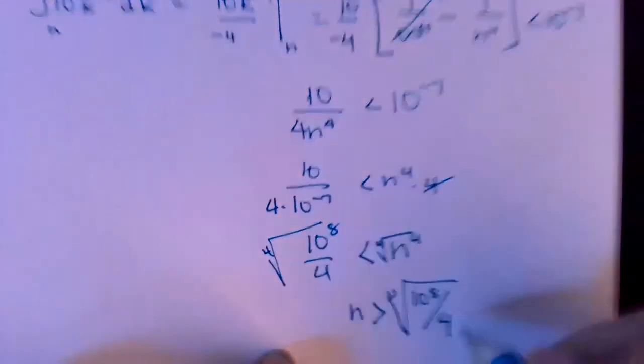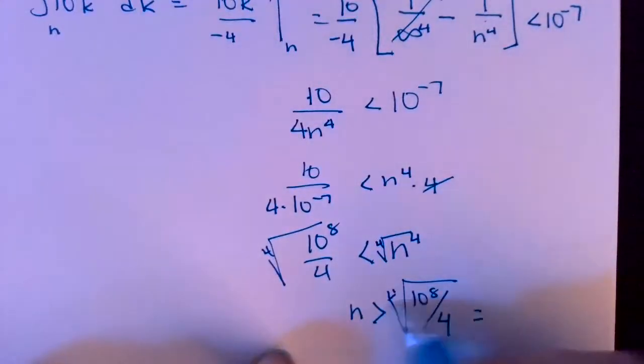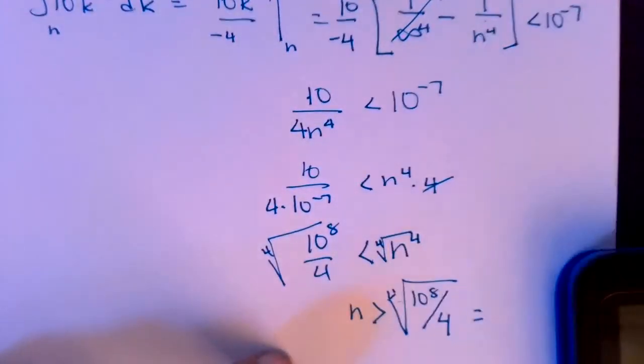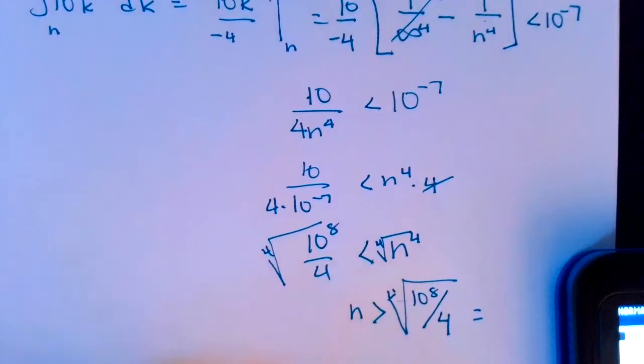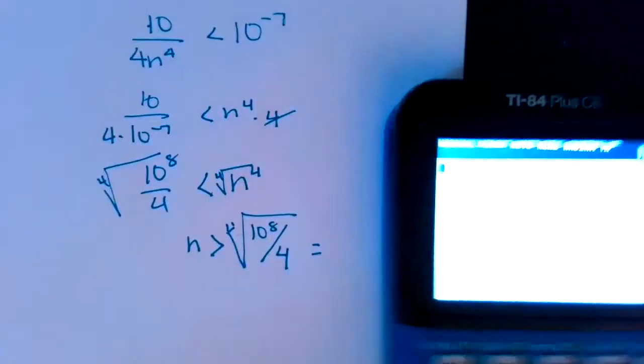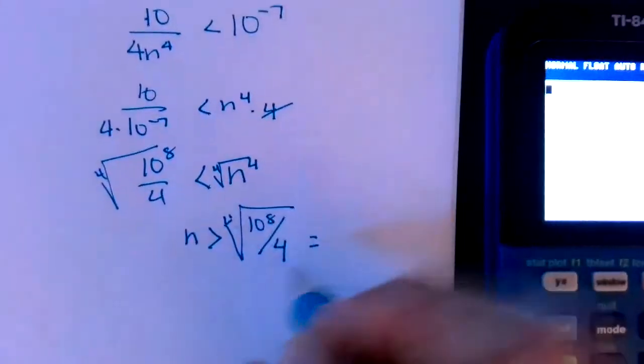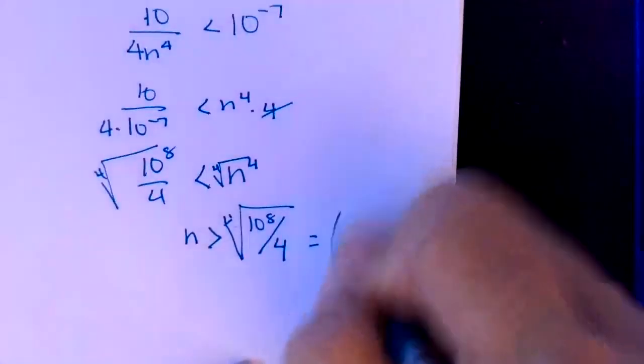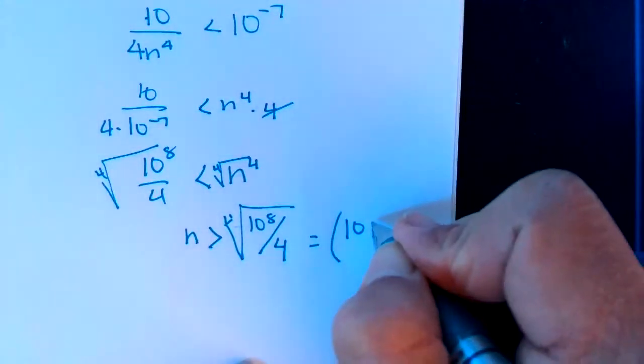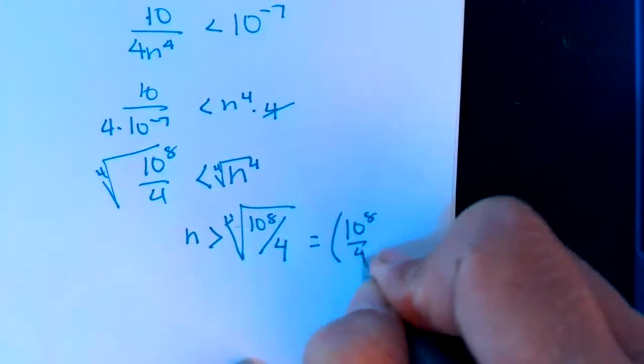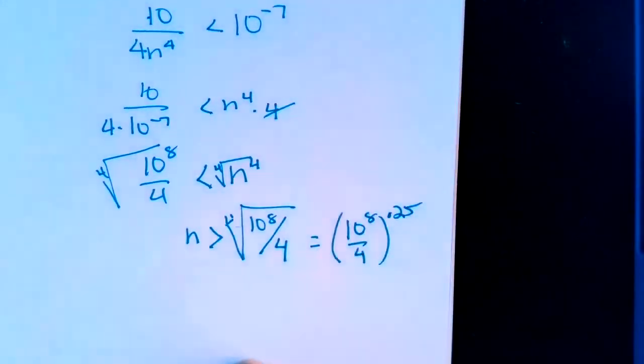So I would use my calculator for that. The numerator could be 100 if you wanted, but I have to do a 4th root anyway, so I'm just going to do it all in there. So the way I'm going to put that in my calculator is I'm going to write parentheses, I'm going to do 10 to the 8th, divide 4, and then I'm going to raise it to the 0.25 power.